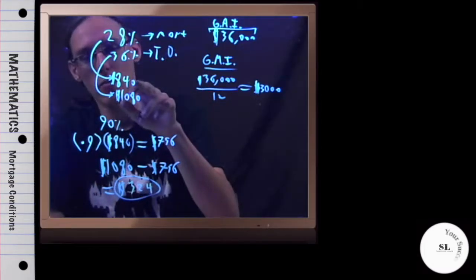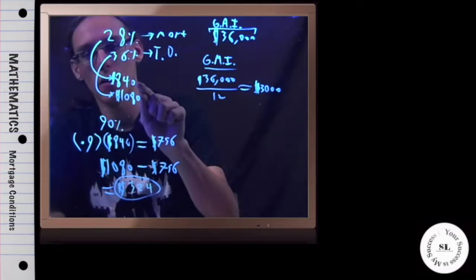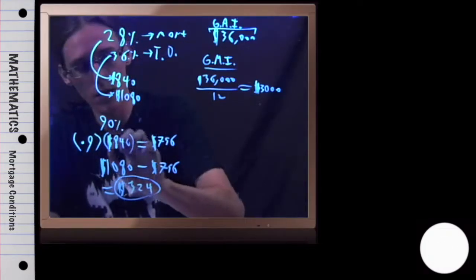So if I chuck that in the calculator, .9 times 840, I'm getting $756.